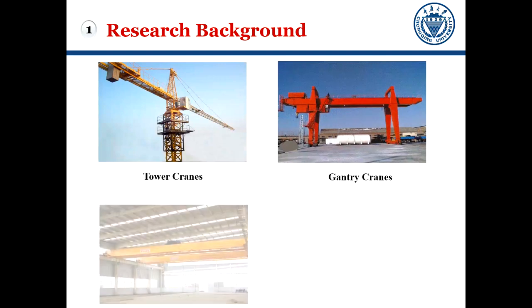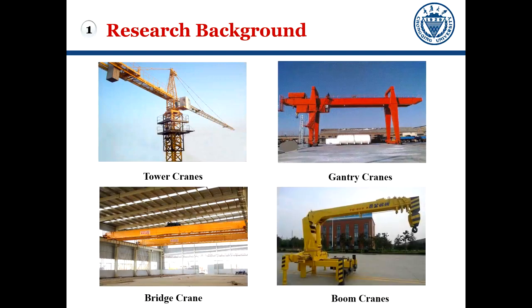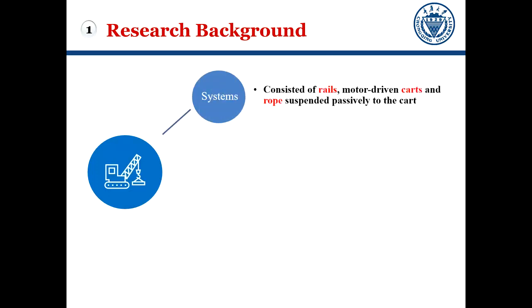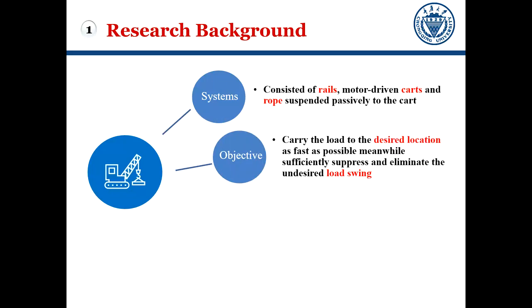In the research background, crane systems including tower cranes, gantry cranes, bridge cranes, and boom cranes are one of the most important mechanical systems used in various industrial applications. They consist of reels, motor-driven carts, and ropes suspended passively to the cart, where the cart moves along the railway to transport the load. The main objective of crane system control is to carry the load to the desired location as fast as possible, while sufficiently suppressing and eliminating undesired load swing.